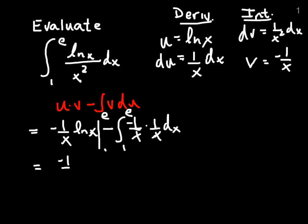We get negative 1 over x, ln of x, evaluated from 1 to e, then we have the integral of 1 over x squared again. We've already done this integral, we know that's the opposite of 1 over x.